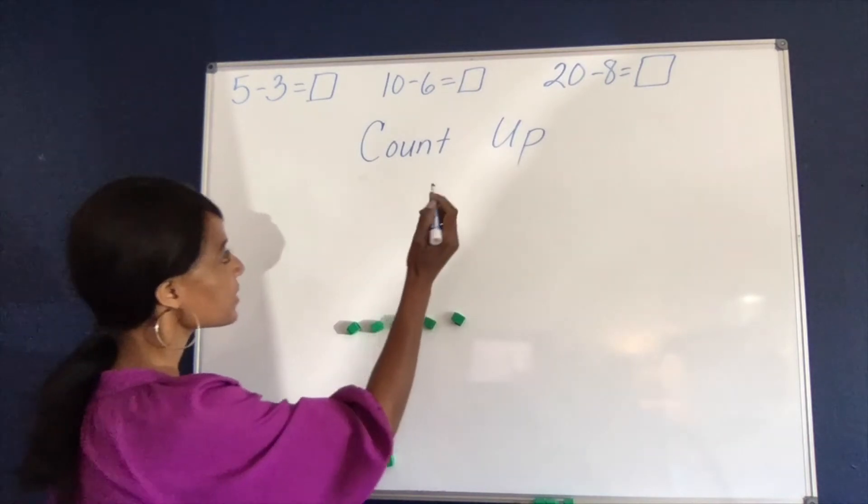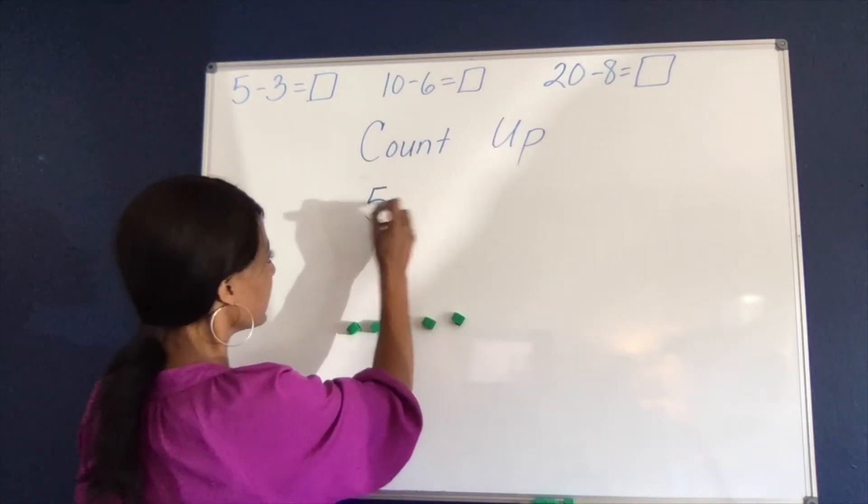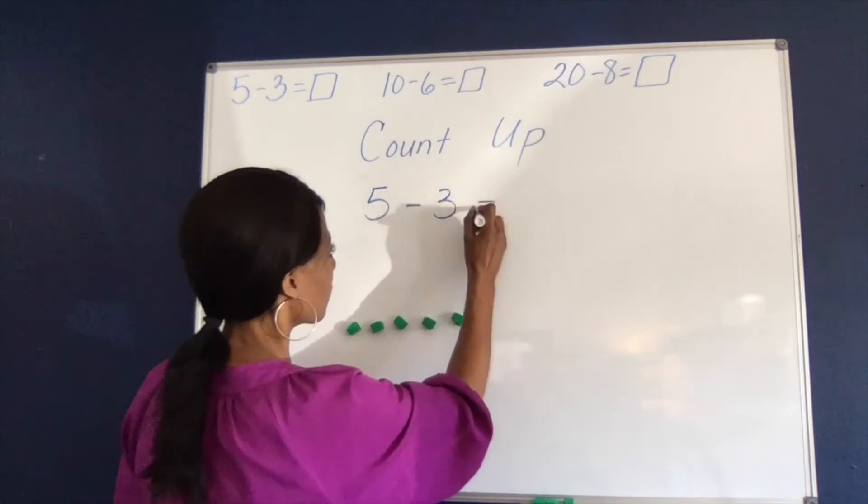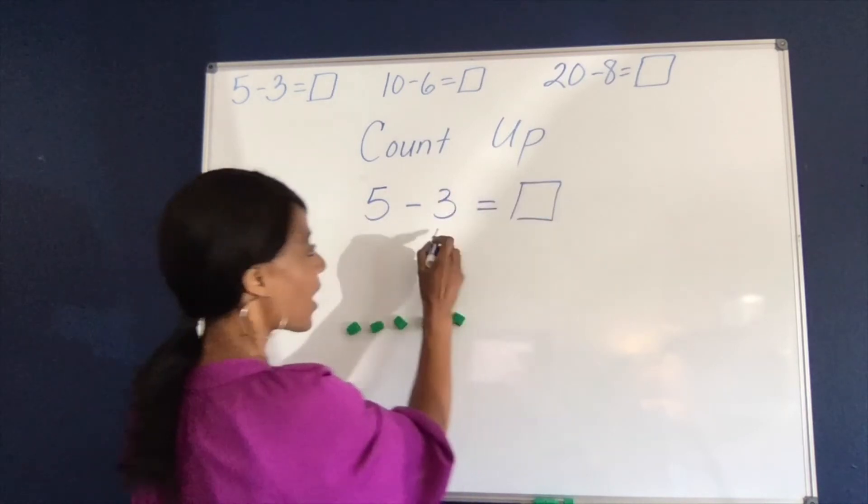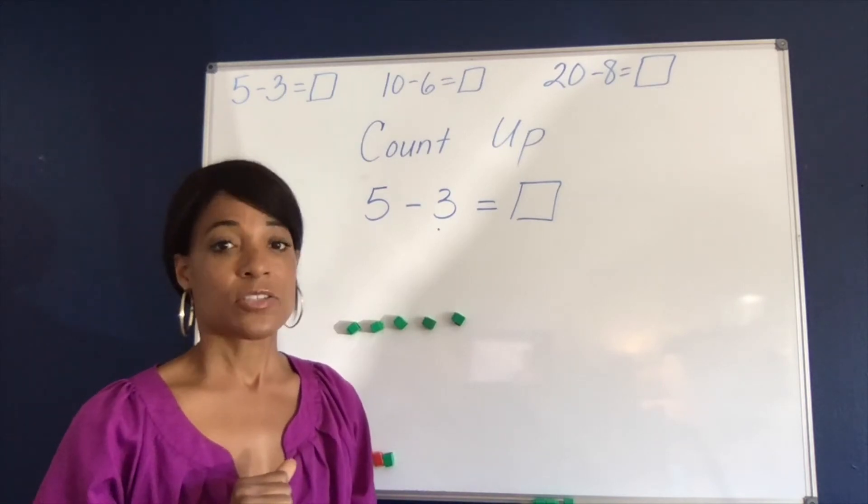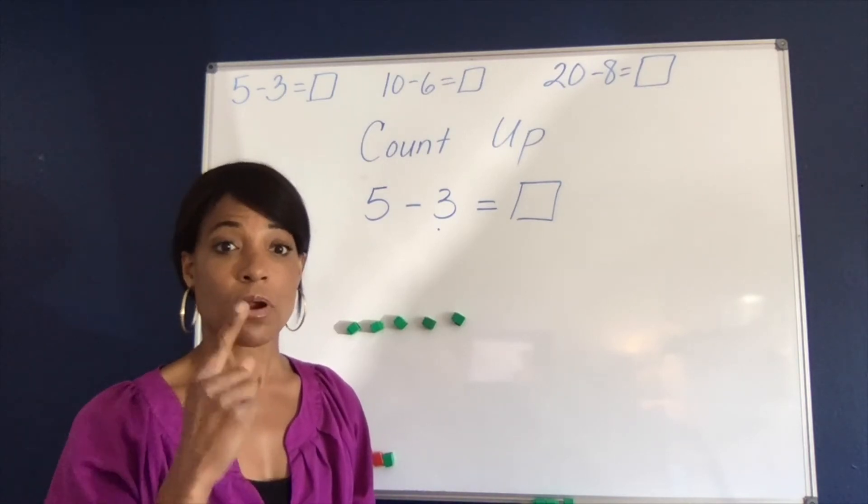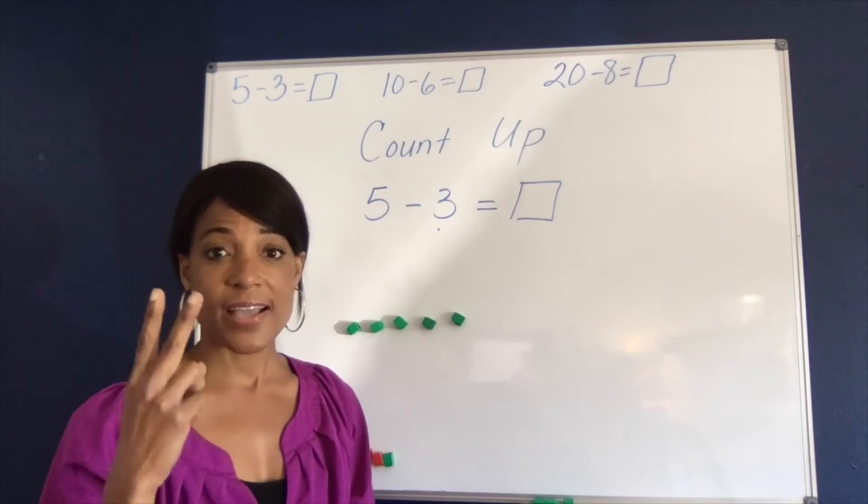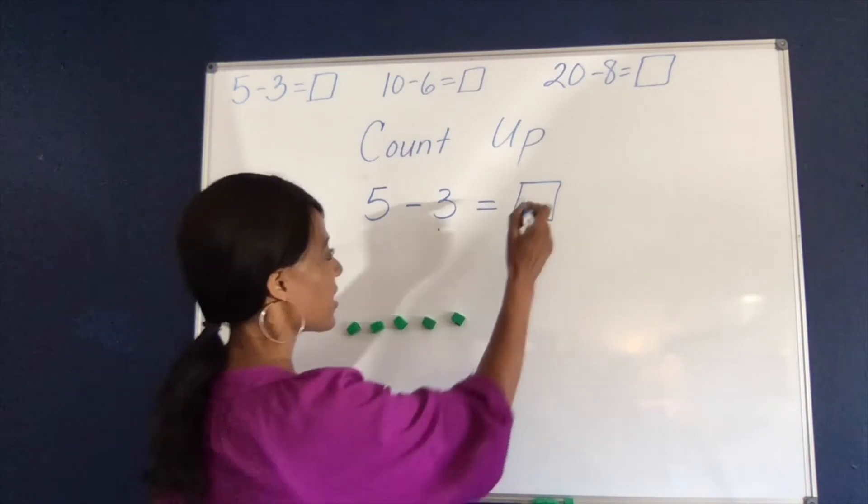So for example, if I'm doing 5 minus 3, I can begin with the number 3 and then count up to 5. So it would sound like 3, 4, 5, and the answer lies on the fingers. So the answer would be 2.